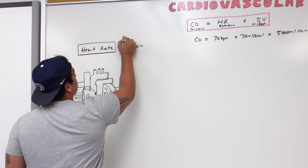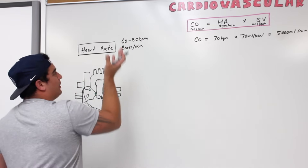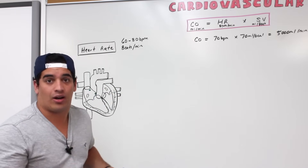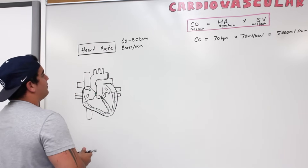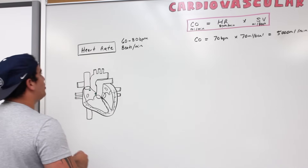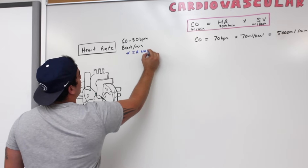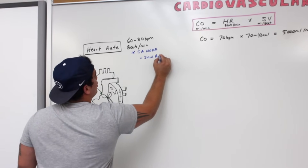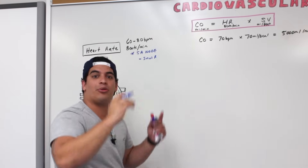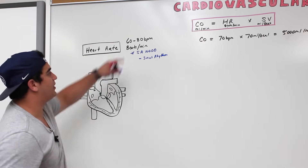The average heart rate is about 60 to 80 beats per minute, and normal range is 60 to 100. Anything above 100 is tachycardia. The SA node is responsible for setting this rhythm — it's the one generating the sinus rhythm, producing intrinsic action potentials sent throughout the heart at around 60 to 80 beats per minute.